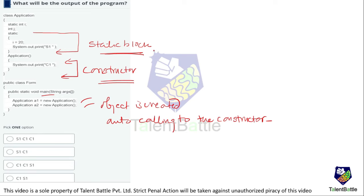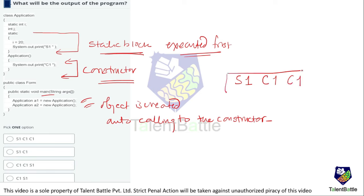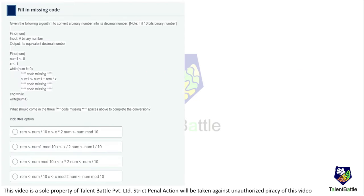In this program, the static block gets executed first. So on the output screen you will get S1, and after that two objects are created so the constructor is called twice, giving C1 and C1. The correct output is S1, C1, C1.